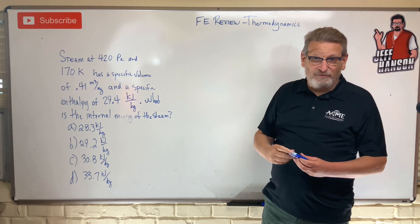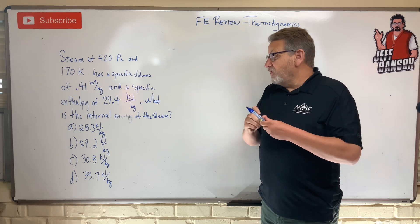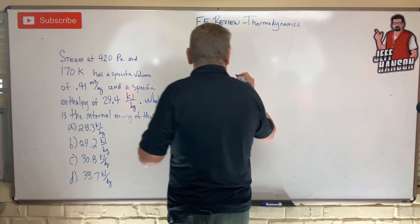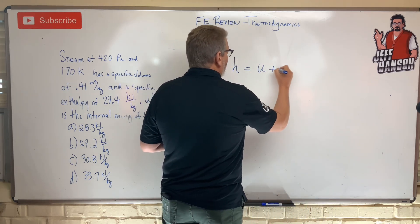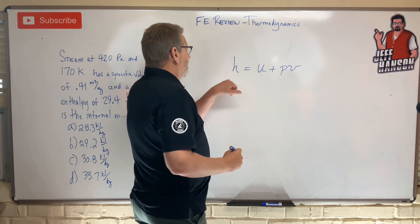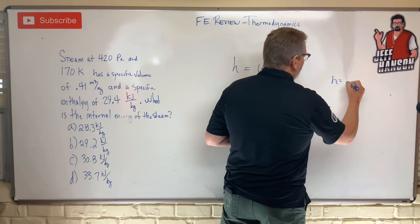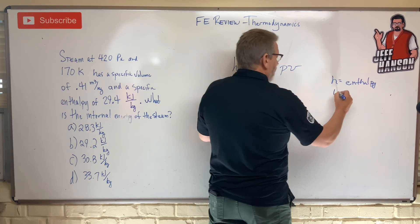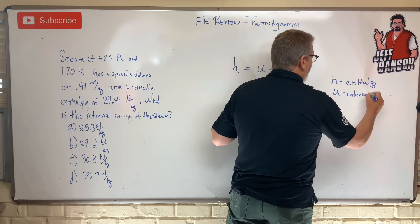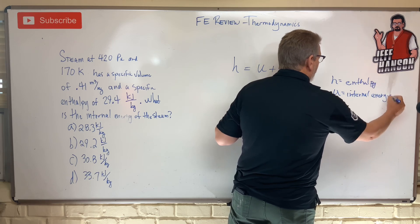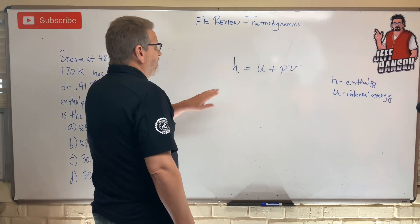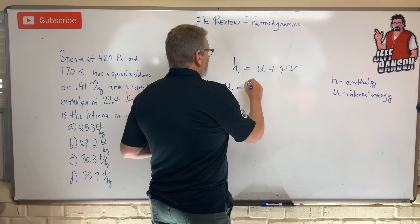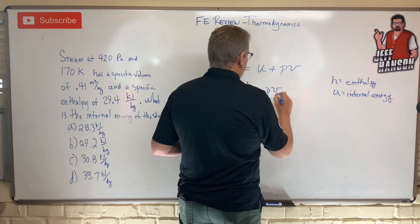Here's the solution. We need an equation that has specific volume, enthalpy, and internal energy in it. That equation is h equals u plus pv, where h is enthalpy, p is pressure, v is specific volume, and u is internal energy. We're looking for internal energy, so we rearrange to: u equals h minus pv.